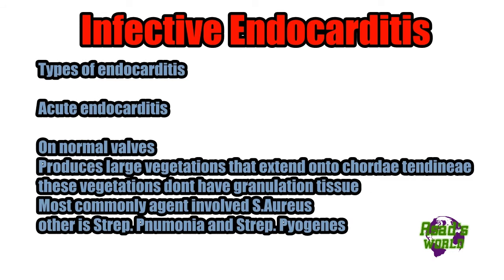There are two types of endocarditis: acute and subacute. Acute endocarditis happens on normal valves and produces very large vegetations that extend onto the chordae. These vegetations do not have granulation tissue. The most commonly involved agent is Staph aureus; other causative organisms may include Strep pneumoniae and Strep pyogenes.